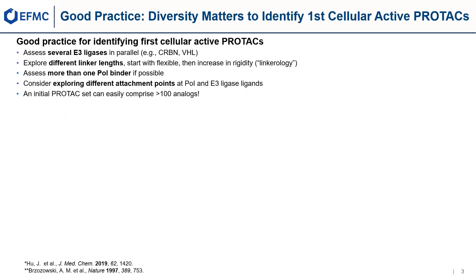Here is a short repetition for good practice to identify the first cellular active PROTAC. Assess several E3 ligase recruiters in parallel in search for a PROTAC to degrade the protein of interest. Explore the length of different linkers — start with flexible linkers, then increase the rigidity of the linker. Assess more than one protein of interest binder if possible, and consider different attachment points in the ligands. An initial PROTAC set can easily comprise more than 100 analogs; thus facile chemistry for variation of the different parts can be advantageous.